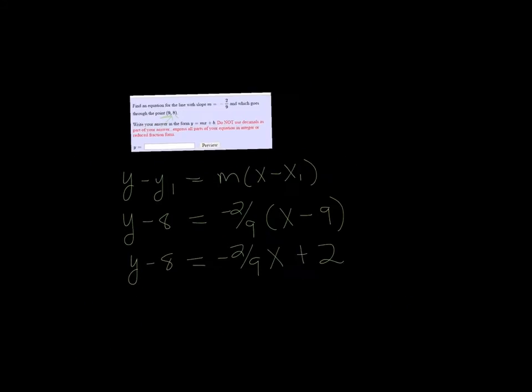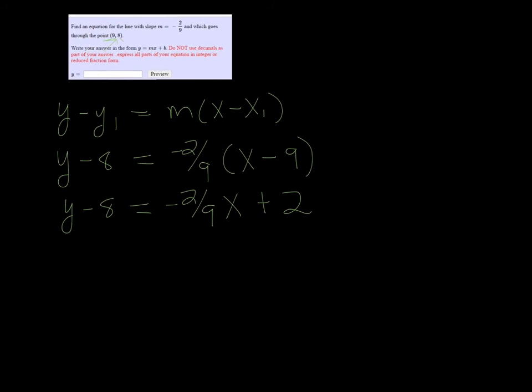And finally, to get y by itself, I'm going to add 8 to both sides, and we get y is equal to negative 2 ninths x plus 10.